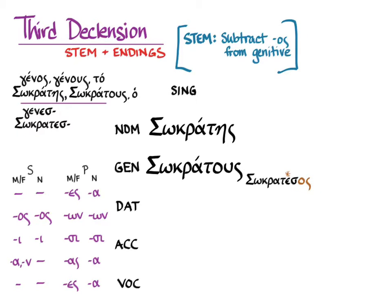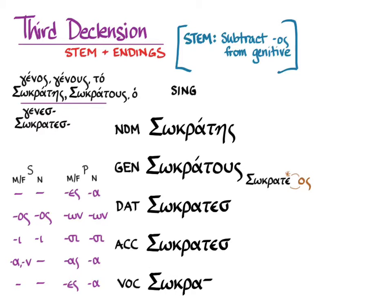You can see the form before the intervocalic sigma drops out: then it goes away, epsilon and omicron contract, and you get Σωκράτους. Putting the stem in the other cases: the intervocalic sigma drops out and you get Σωκράτει for the dative; the sigma drops out, epsilon and alpha contract, and you get Σωκράτη for the accusative. For the vocative, the rule for third declension vocatives is that it is simply the stem — so all we really have to do is change the medial sigma to a final one, giving Σώκρατες.